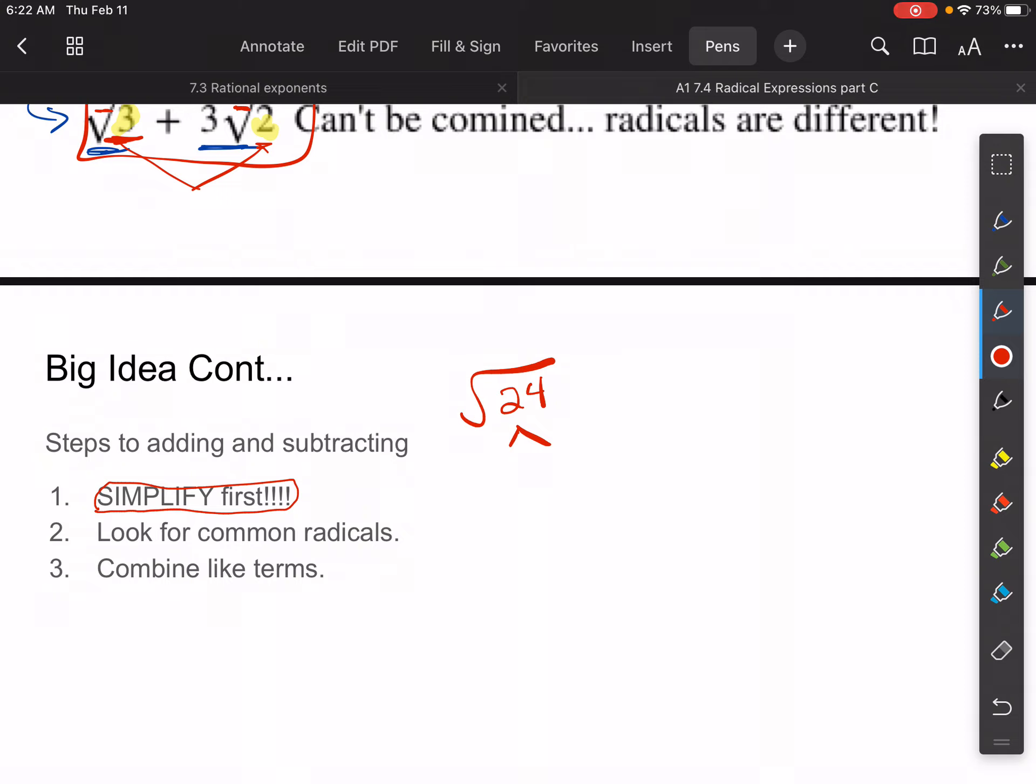So this is the perfect square in there is 4, right? 4 × 6 gives me 24. So I can write this as √4 × √6, which is 2√6. So you want to simplify first, write it and take out the perfect squares first, then look for common radicals, then combine those like terms.